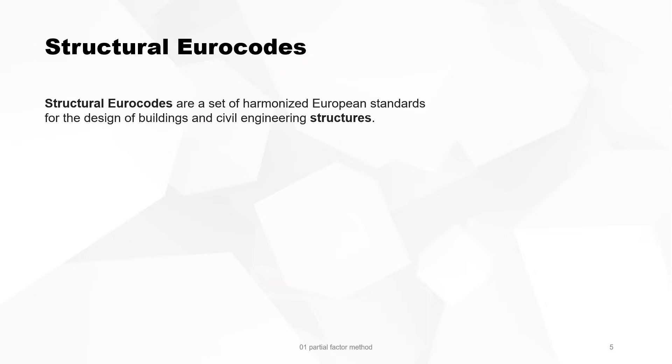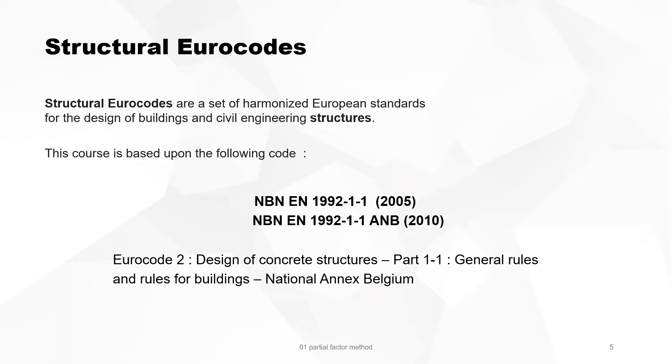Structural Eurocodes are a set of harmonized European standards for the design of buildings and civil engineering structures. This course is based upon Eurocode 2 part 1-1 of 2005 and its Belgium Annex of 2010.